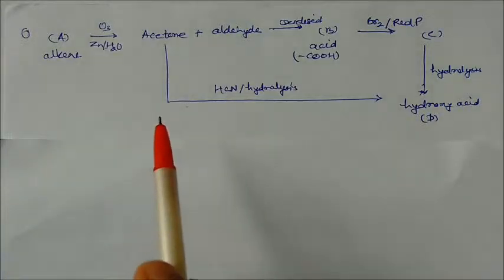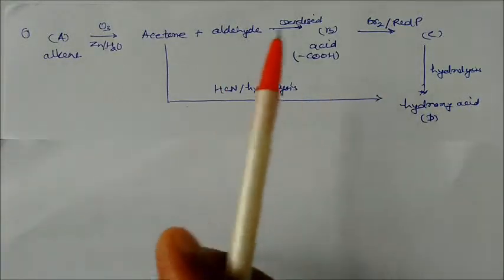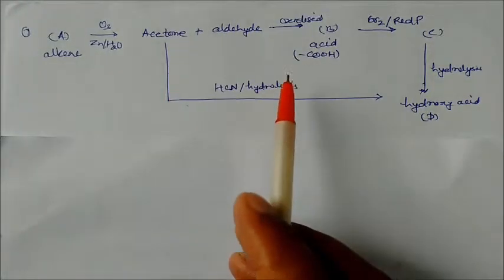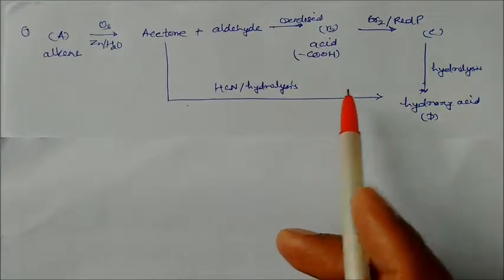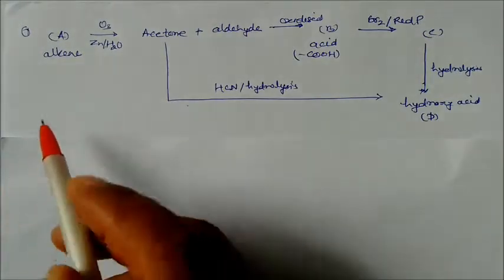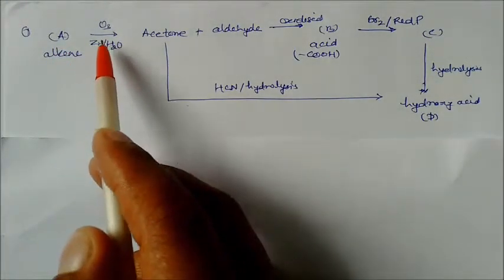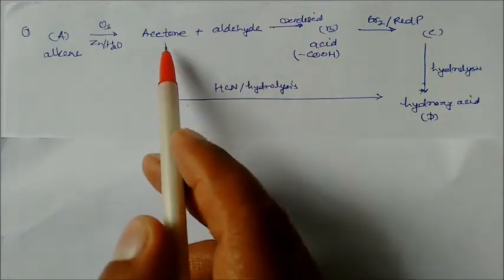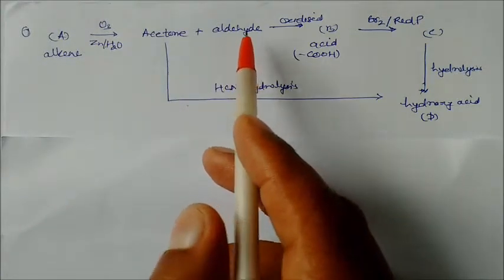Some solved examples of hydrocarbons in flowchart mode. We have a compound that is an alkene. On ozonolysis, we get two products: acetone and an aldehyde. We don't know which compound the aldehyde is yet.